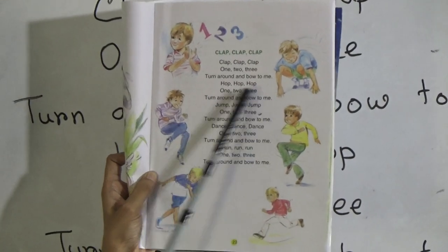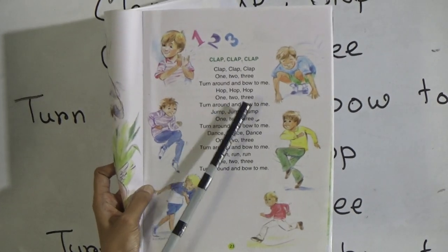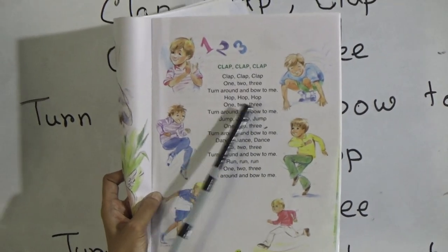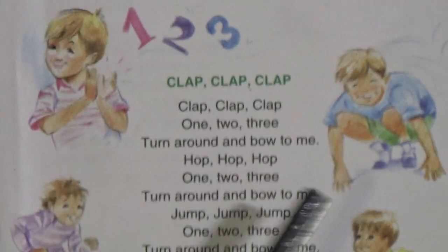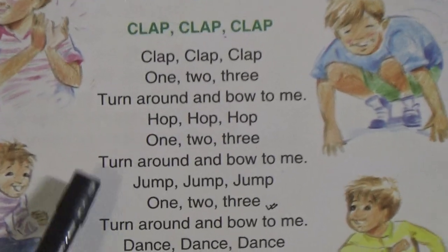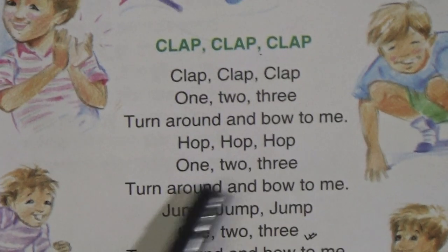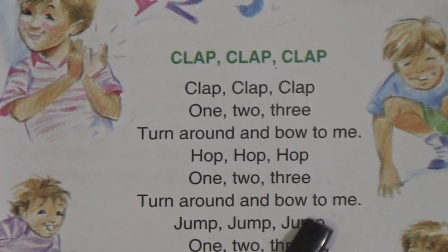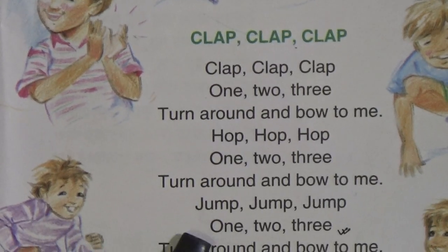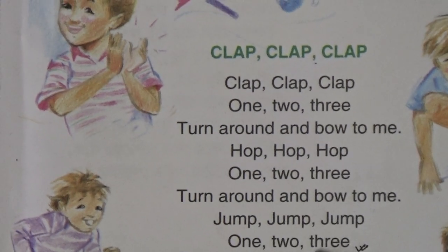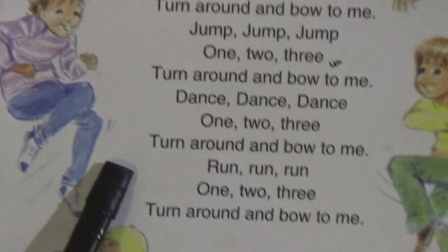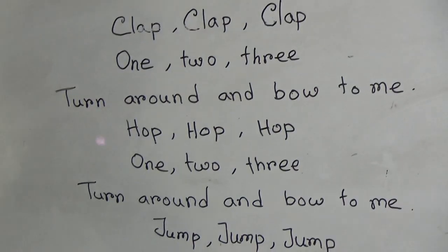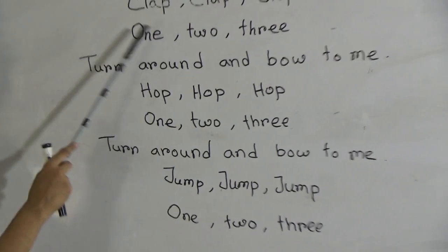Now: Hop, Hop, Hop — 1, 2, 3. Hop means to make a short jump, like a frog hops. So Hop, Hop, Hop — 1, 2, 3 — turn around and bow to me. Then: Jump, Jump, Jump — 1, 2, 3. Look at this boy, he is jumping. Here I have written the poem — look at this.